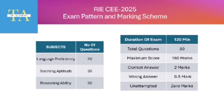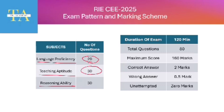The question paper covers three major subjects: Language Proficiency, Teaching Aptitude, and Reasoning Ability. Language Proficiency covers comprehension, rearranging sentences, selecting suitable words for blanks, and finding errors — 20 questions total. Teaching Aptitude covers attitude towards children, education and teaching profession, interest in teaching, leadership qualities, and policy documents — 30 questions. Reasoning Ability covers verbal and non-verbal reasoning, missing numbers, number series, letter series, theme finding, jumbling, and analogy — 30 questions. The exam duration is 120 minutes.